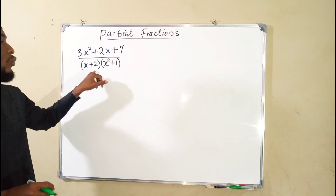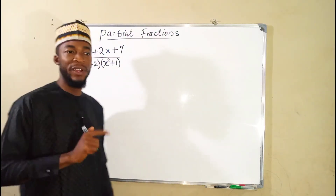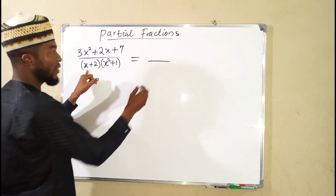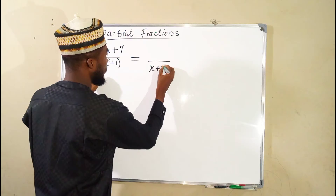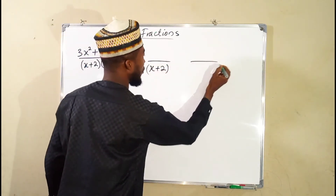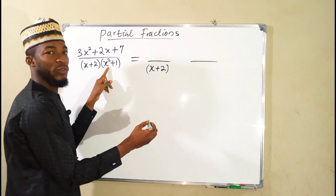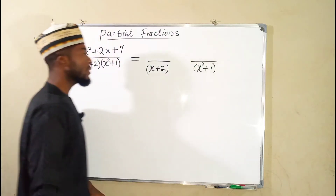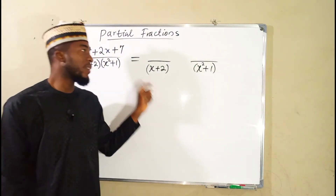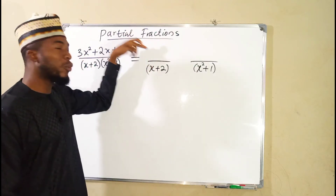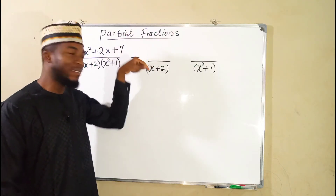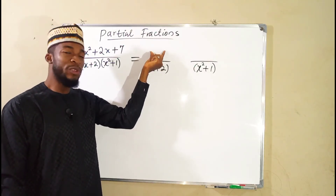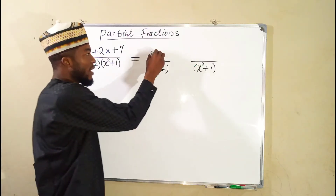Because we have two factors, we are going to obtain two separate fractions. The first one will contain this factor as its denominator — x plus 2. And the other fraction is going to contain the other factor as its denominator — x squared plus 1. Their corresponding numerators are going to be a polynomial of one degree less than the denominator. This is a linear factor, therefore the numerator is going to be a constant. We can name that constant as a.